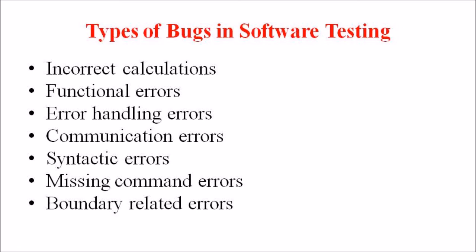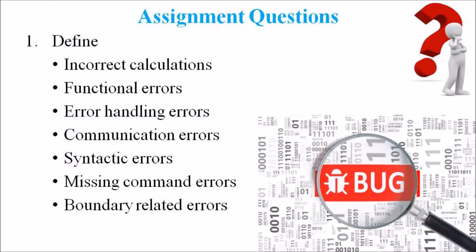So students, these are the different types of bugs or errors in the software engineering field. Hope you have understood this topic. Kindly go through this assignment question: define the following — incorrect calculations, functional errors, error handling errors, communication errors, syntactic errors, missing command errors, and boundary related errors. In the upcoming lecture, we will discuss the path to testing in software engineering.